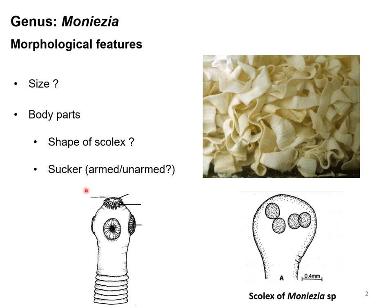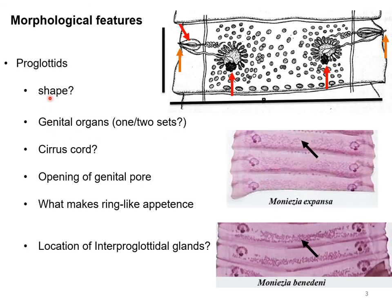For most cestodes, the shape of the scolex is cone-shaped, and at the top there may or may not be a rostellum. However, in the case of Moniezia, the shape of the scolex is almost rounded, there are four prominent suckers, there is no rostellum, and inside the suckers there are no hooks. Therefore, they are called unarmed cestodes.